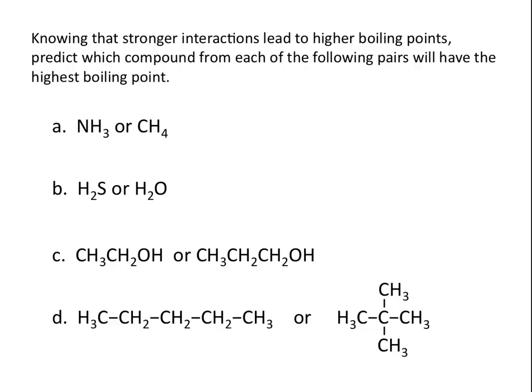Let's try another problem. Knowing that stronger intermolecular interactions lead to higher boiling points, predict which compound from each of the following pairs will have the highest boiling point. Looking at A, we have NH3 or CH4. Both molecules have London dispersion forces and are approximately the same molecular weight, so London dispersion forces should be about equal. But NH3 will have hydrogen bonding interactions, while CH4 has no other interactions besides London dispersion forces. So we can predict that NH3 will have stronger interactions and the higher boiling point.